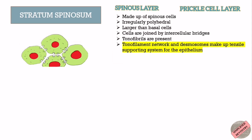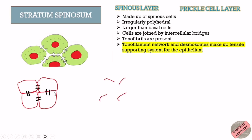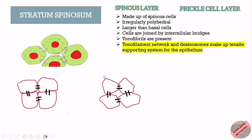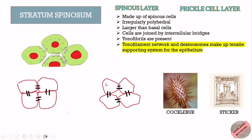Like other layers, cells in the spinous layer are joined by desmosomes. However, during tissue preparation, these spinous cells undergo shrinkage, causing intercellular spaces to become prominent and the cell size to reduce. This gives a spiny or thorny appearance to these cells. In simple terms, the spiny appearance is due to shrinkage of cells during tissue preparation, causing them to separate while remaining attached only at the desmosomes, making the spinous cells resemble a cocklebur or sticker with each spine ending at a desmosome.